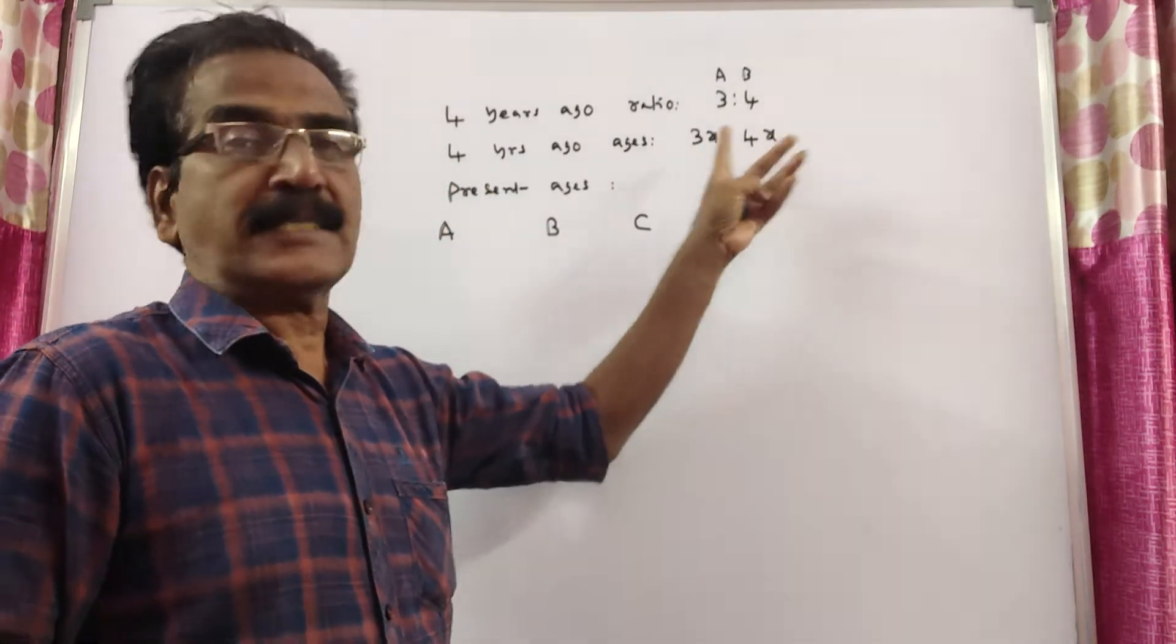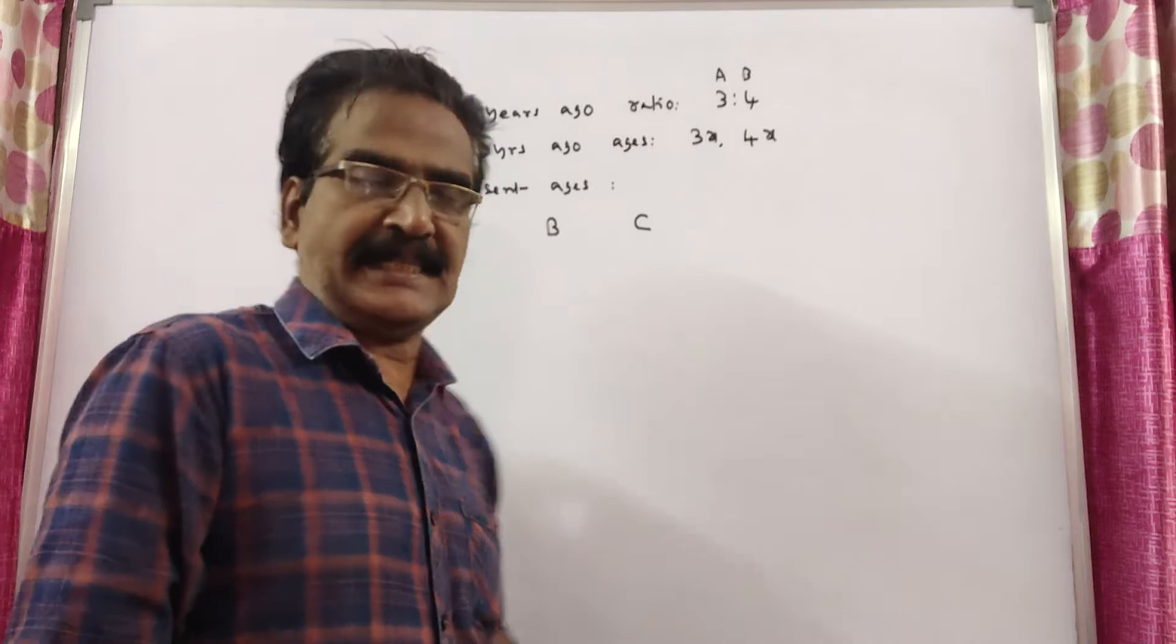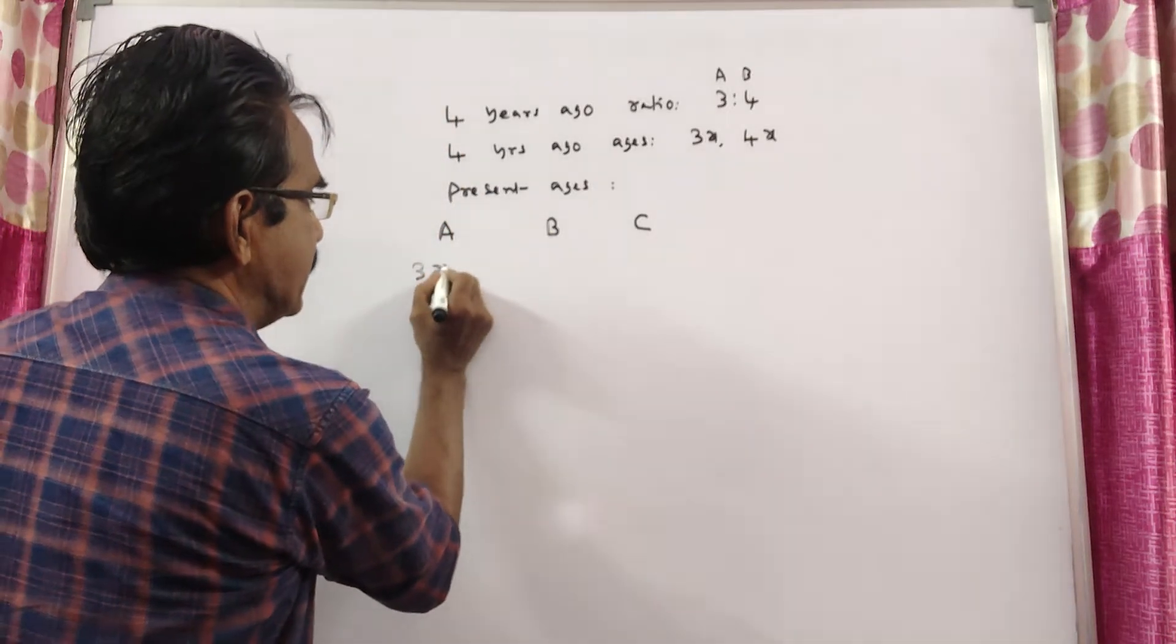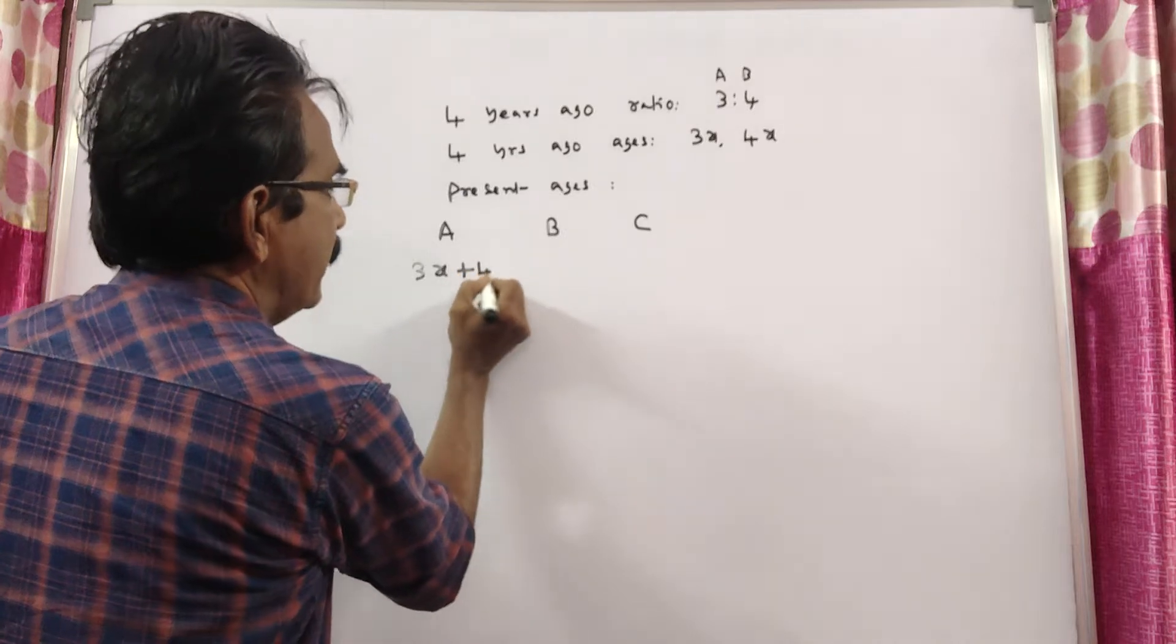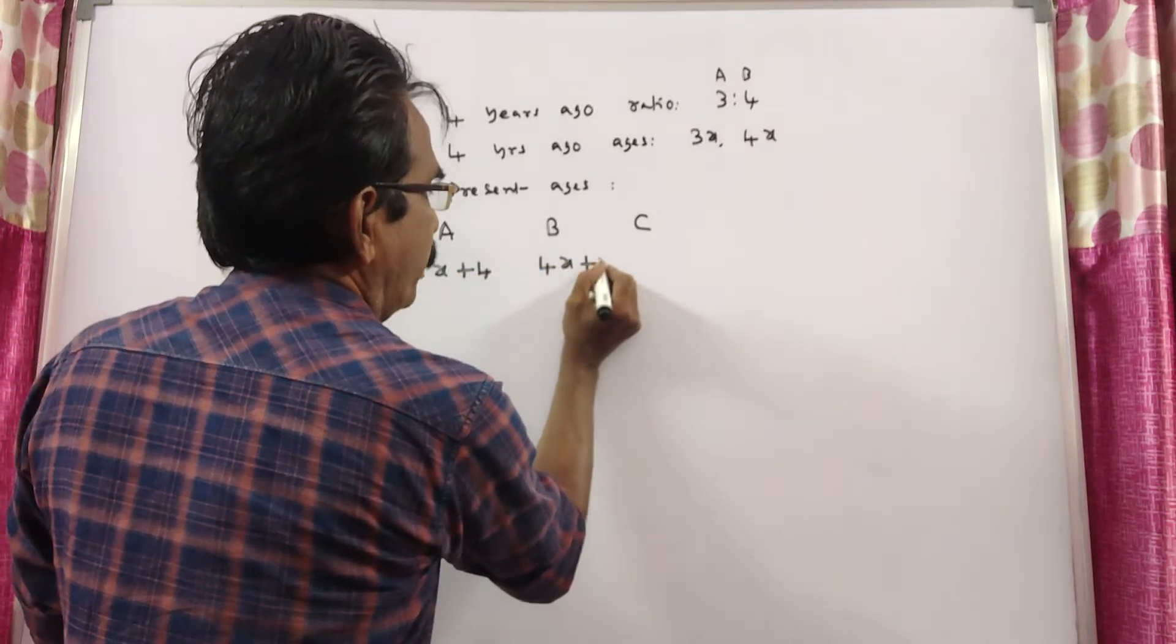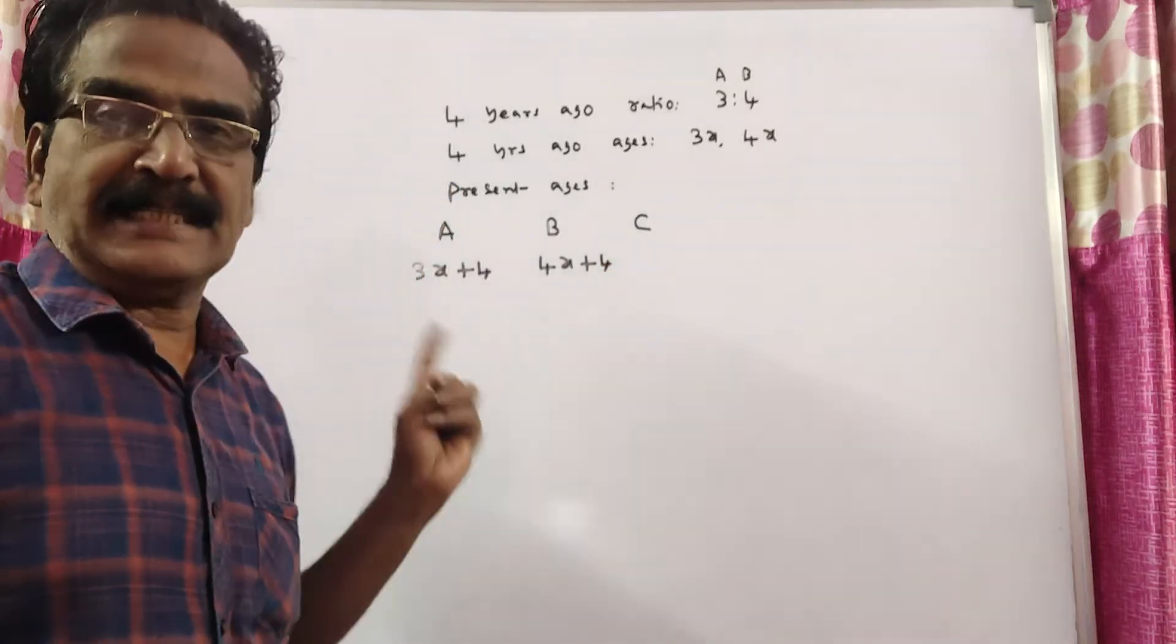4 years ago 3x, 4x and present ages is 3x plus 4. A's age is 3x plus 4 and B's age is 4x plus 4. Present ages.